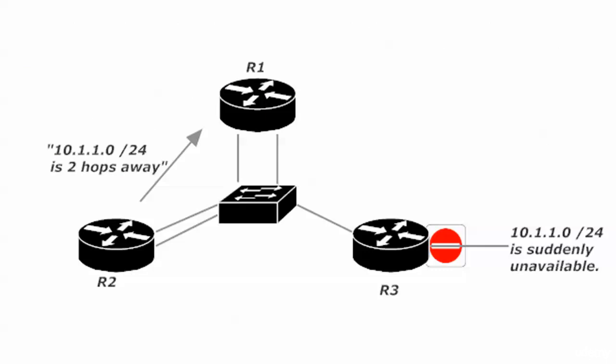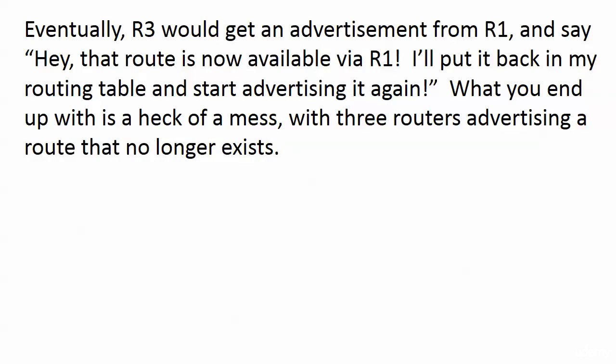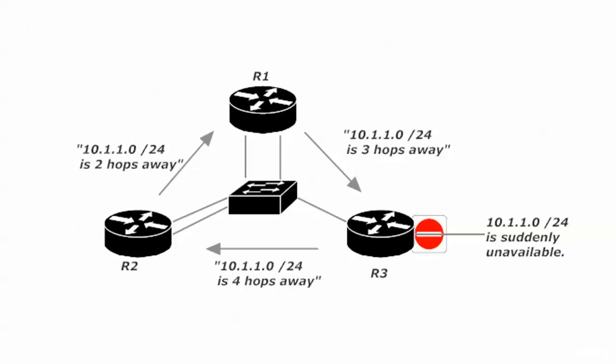So it's not enough for router 3 to stop advertising it — it's got to have a way to tell everybody else that route just ain't around anymore. Because what happens next in our walkthrough without route poisoning is that router 3 is going to get an advertisement from router 1 saying that route is now available via router 1, and it'll put it back in its routing table and start advertising it again. And what you end up with is this mess.